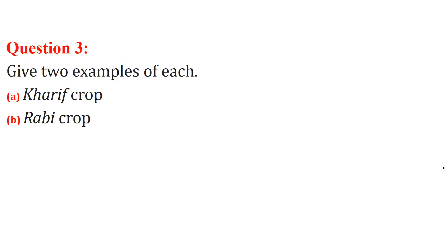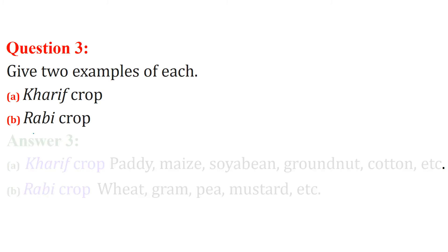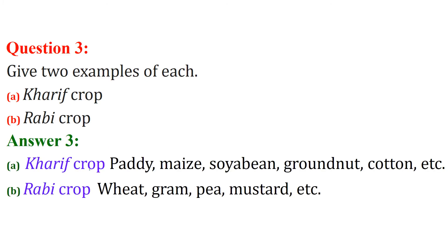We have just seen these in the previous question, so we can answer very comfortably. Give two examples of each — Kharif and Rabi. Kharif crops are paddy, maize, soya bean, groundnut, and cotton. Rabi crops are wheat, gram, pea, and mustard.